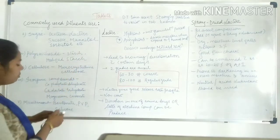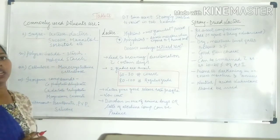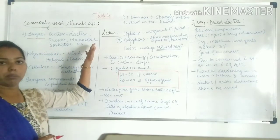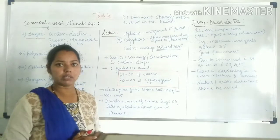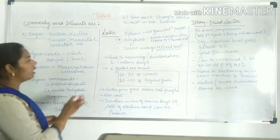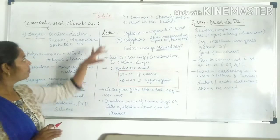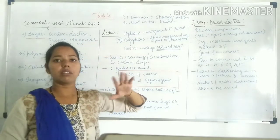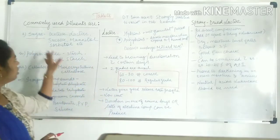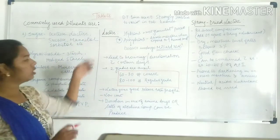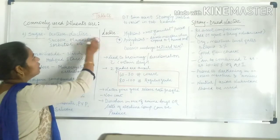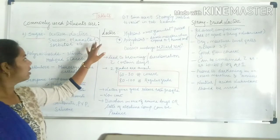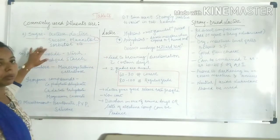The advantage of sugar-based diluents is that they are generally used for the manufacturing of chewable tablets. This is because in chewable tablets we need a sweet type of diluent which can mask or cover the taste of the API. For that purpose, the commonly used diluent is mannitol for chewable tablets.